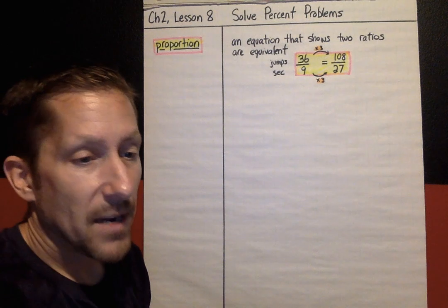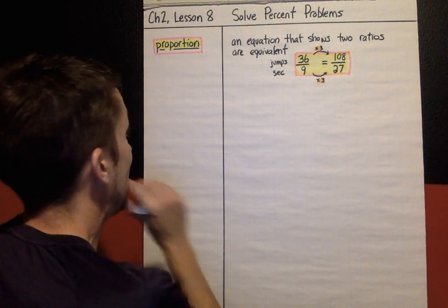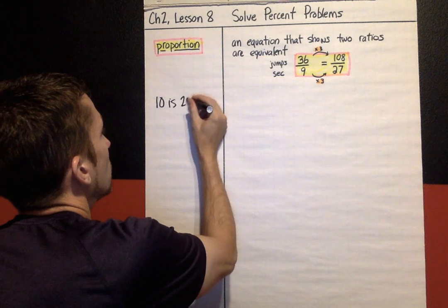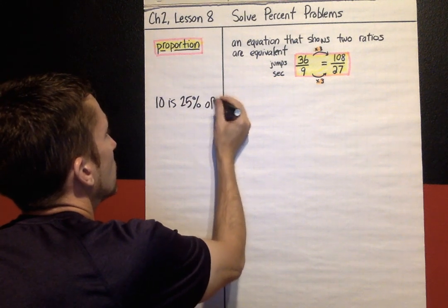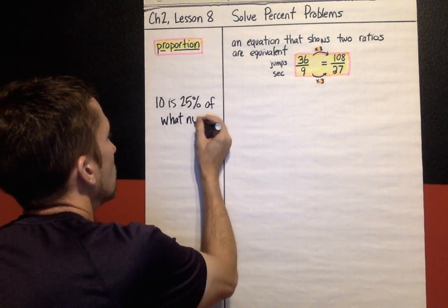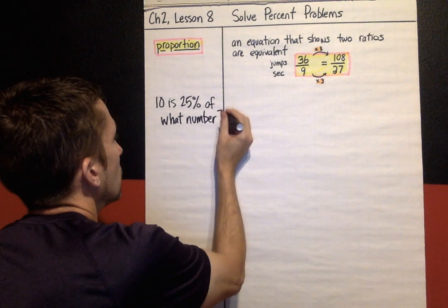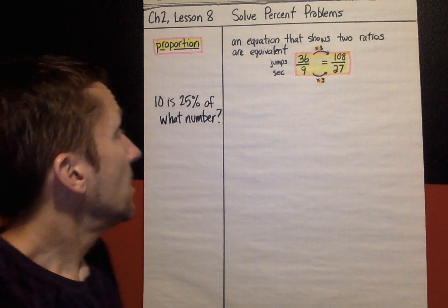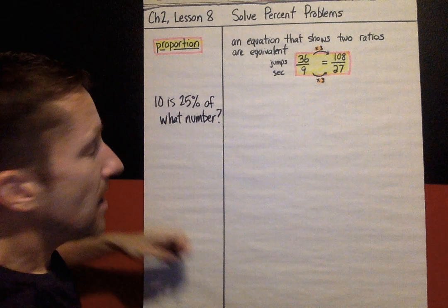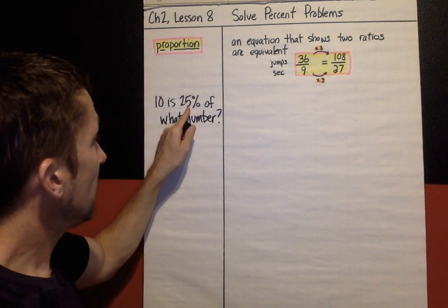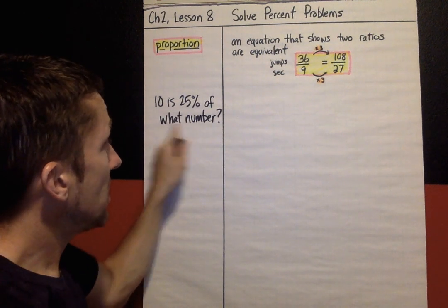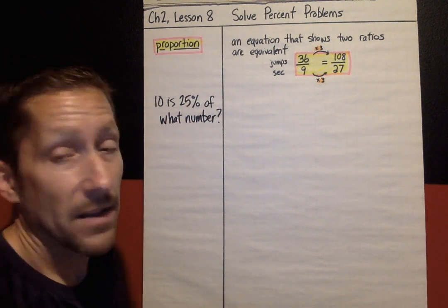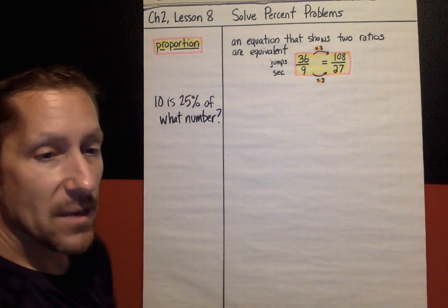Okay, percent problems. First example we're going to do is, 10 is 25% of what number? In lesson seven, we found a percent of a number. Well, now we're trying to find a total amount. 10 is 25% of what number? So this is a total number, and 10 is 25% or a part of that number. So one strategy that you can use to do this is called use double number lines.